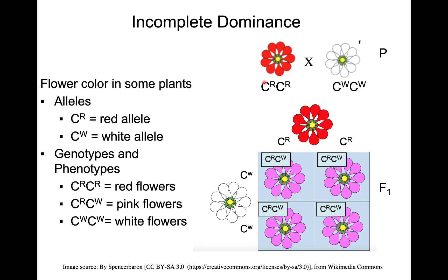The red color allele is incompletely dominant over the white allele. The naming convention is a little different because there's no absolute dominant and recessive relationship. C stands for color. We have a red allele and a white allele for the gene that determines flower color. Homozygous big R gives you red flowers, homozygous W gives you white flowers, and a heterozygote gives you pink flowers — a phenotype in between the two.